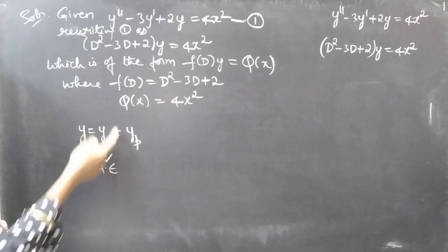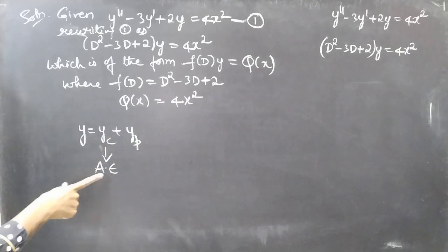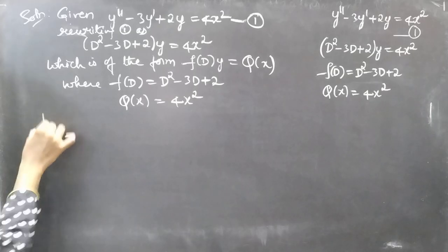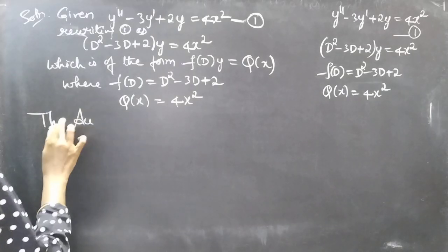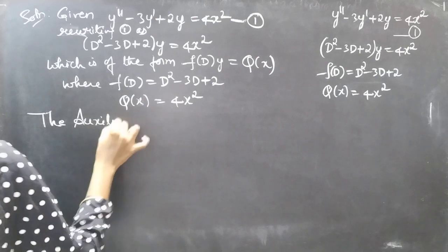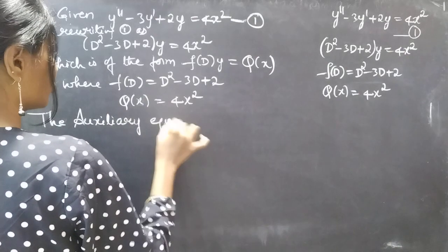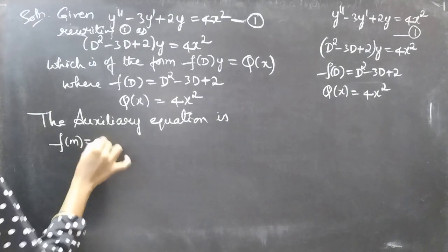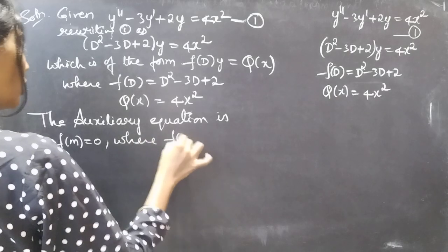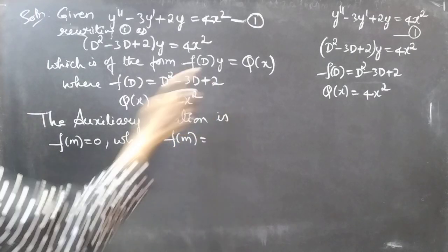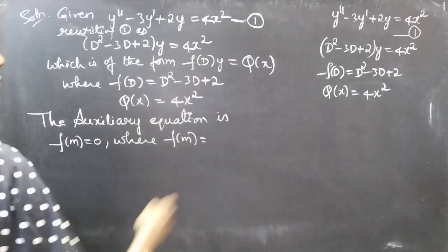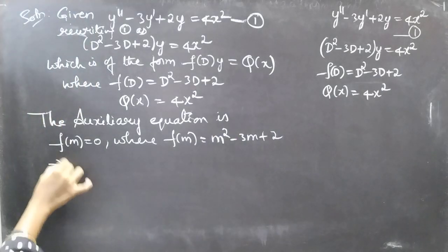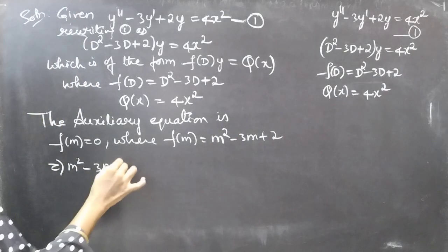To find yc we use the auxiliary equation f(m) = 0. Since f(D) = D² - 3D + 2, replacing D with m gives f(m) = m² - 3m + 2. So the auxiliary equation is m² - 3m + 2 = 0. We need to find the roots by factorizing.